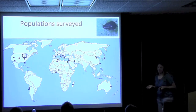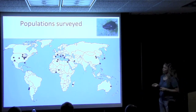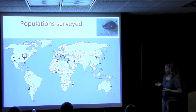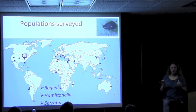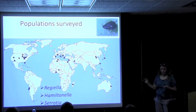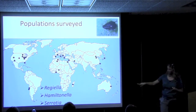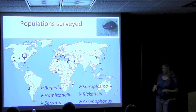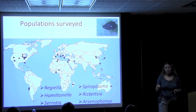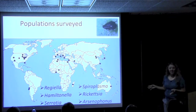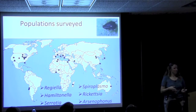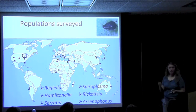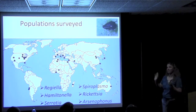We acquired about 44 populations total from all over the world and took a diagnostic approach — using primers that amplify specific bacterial symbionts and only that symbiont. We looked specifically for the big three: Regiella, Hamiltonella, and Serratia; she also looked for Spiroplasma, Rickettsia, and Arsenophonus, all of which have been reported from aphids. I should emphasize this is not comprehensive — there could be other symbionts we didn't look for. Had we started two or three years later, there would have been a stronger pyrosequencing component to pick up those possibilities.